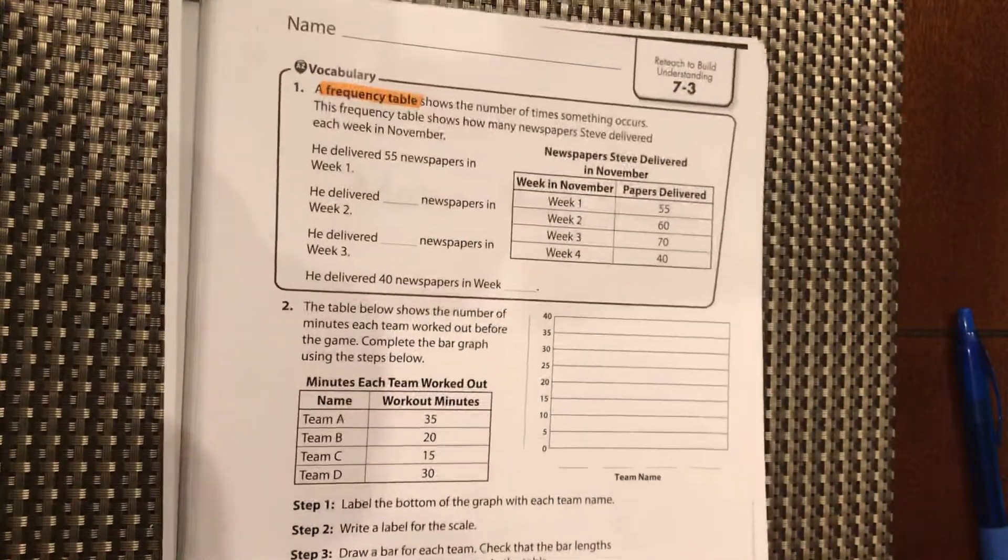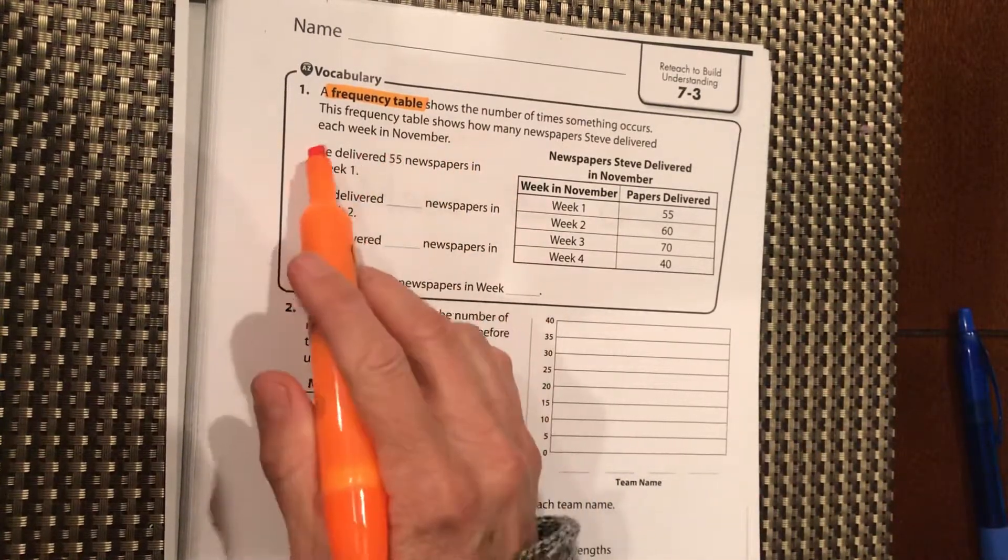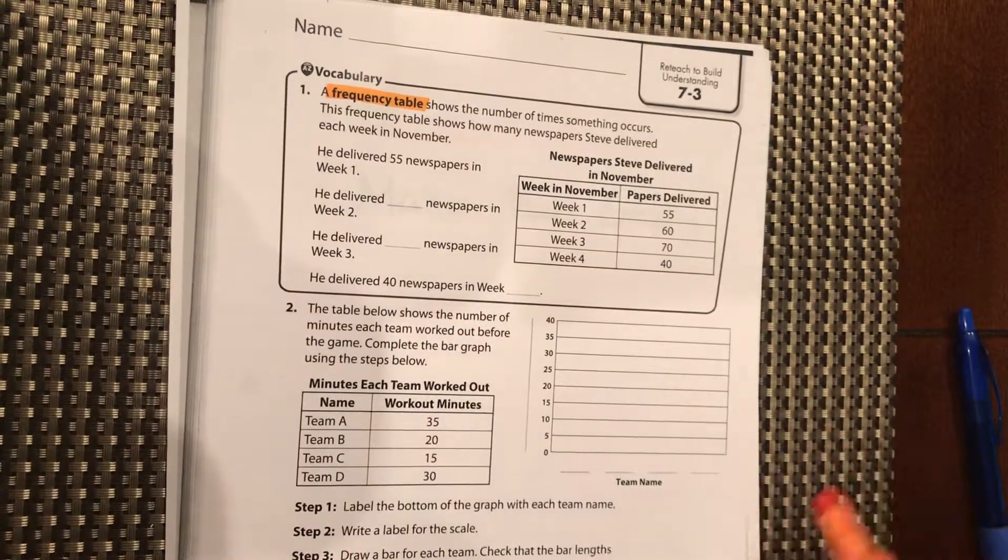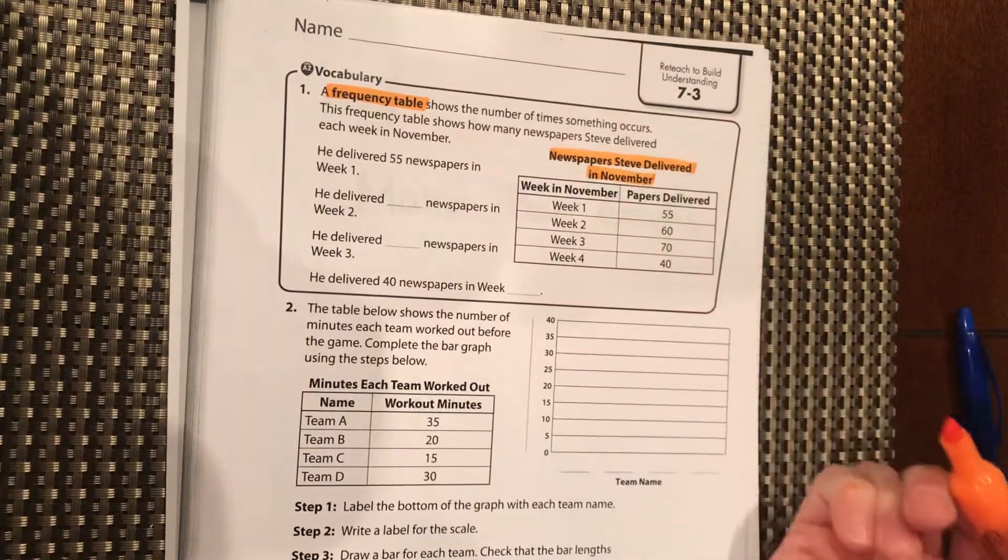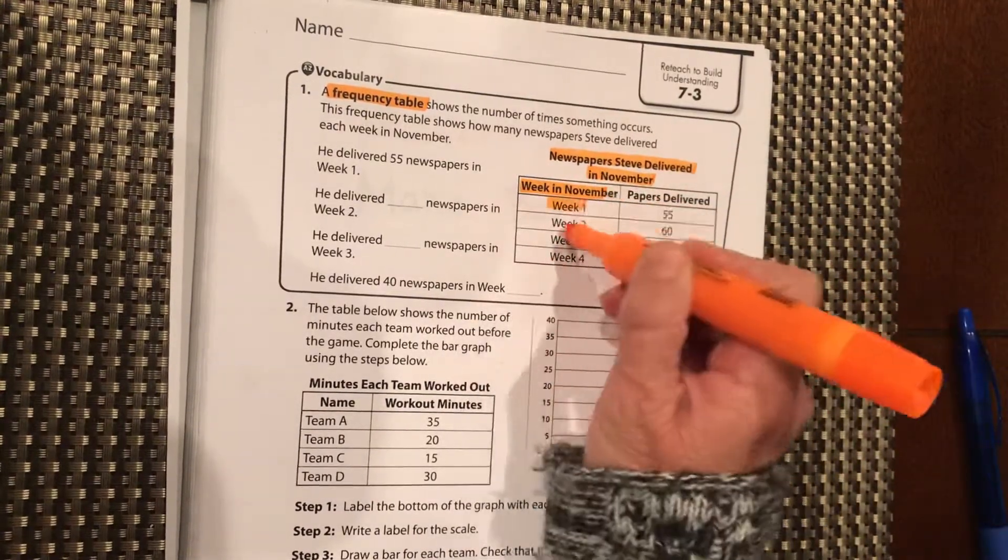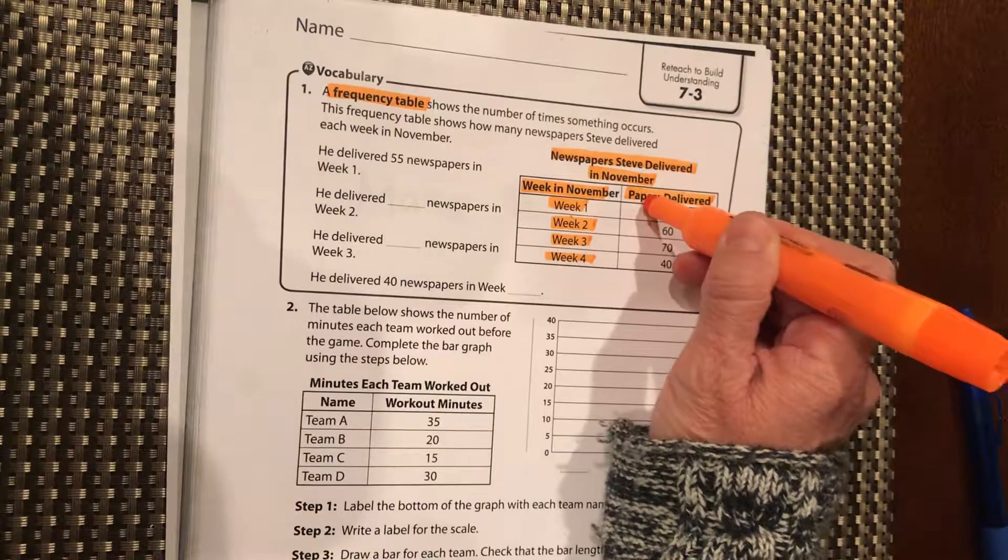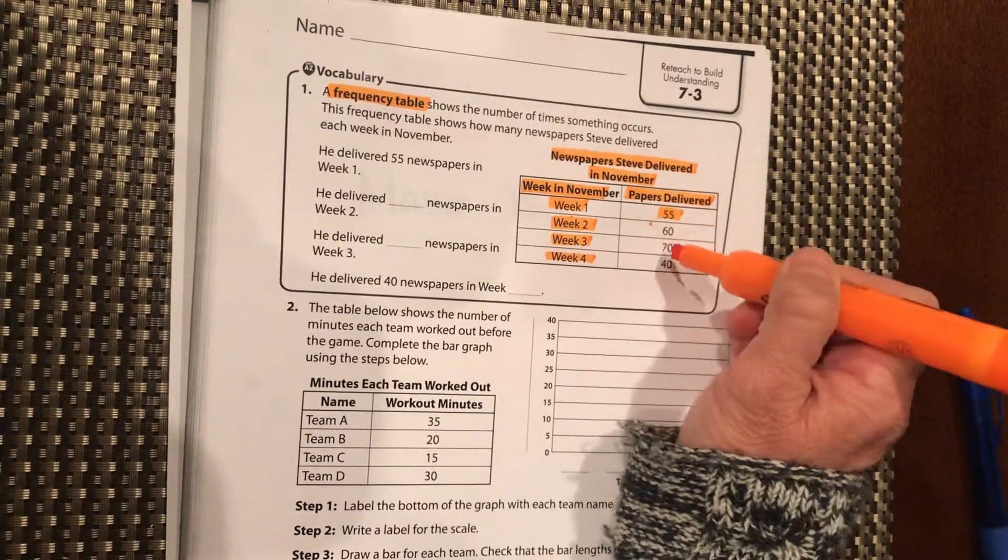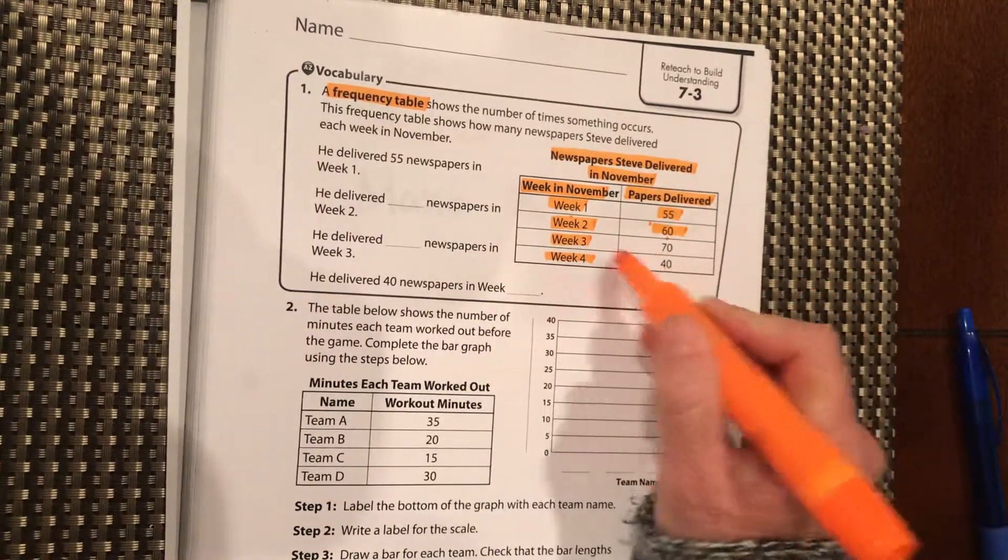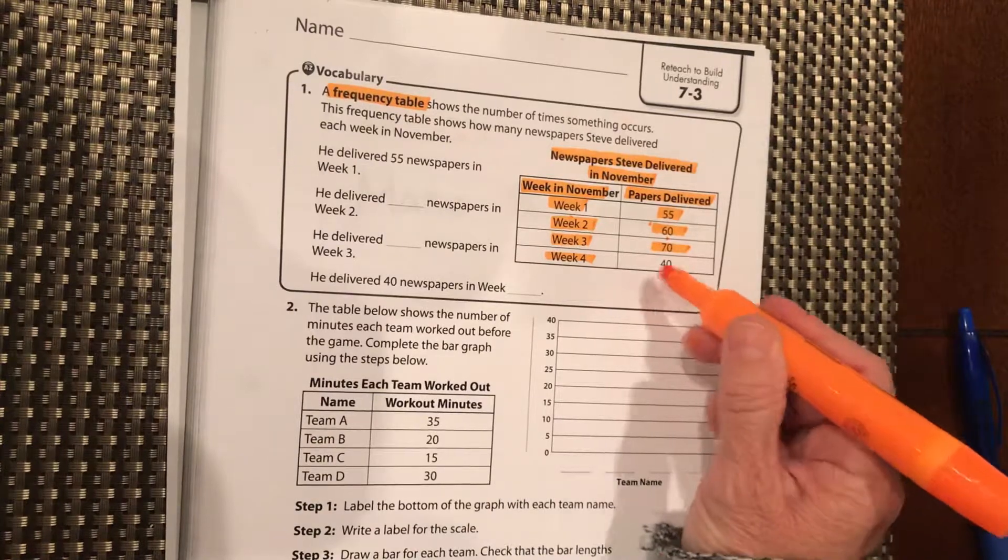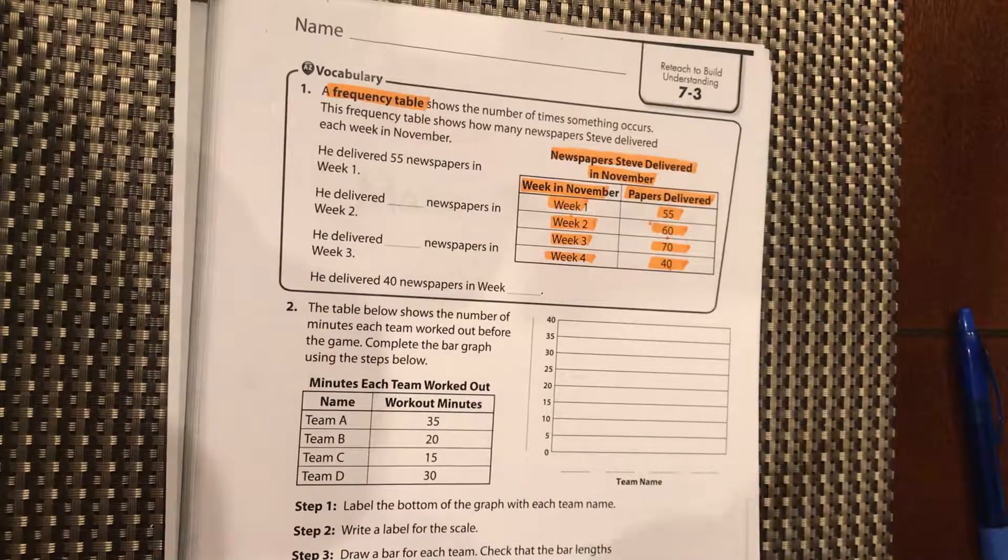We're going to do the same thing here, just another way of looking at data. This frequency table shows how many newspapers Steve delivered each week in November. First thing when we're looking at a table, we need to look at our title: Newspapers Steve delivered in November. We have week one, week two, week three, and week four. Going across, this number will tell us the number of papers Steve delivered in each week. They're talking about newspapers where you drive around and throw them out into people's driveways.